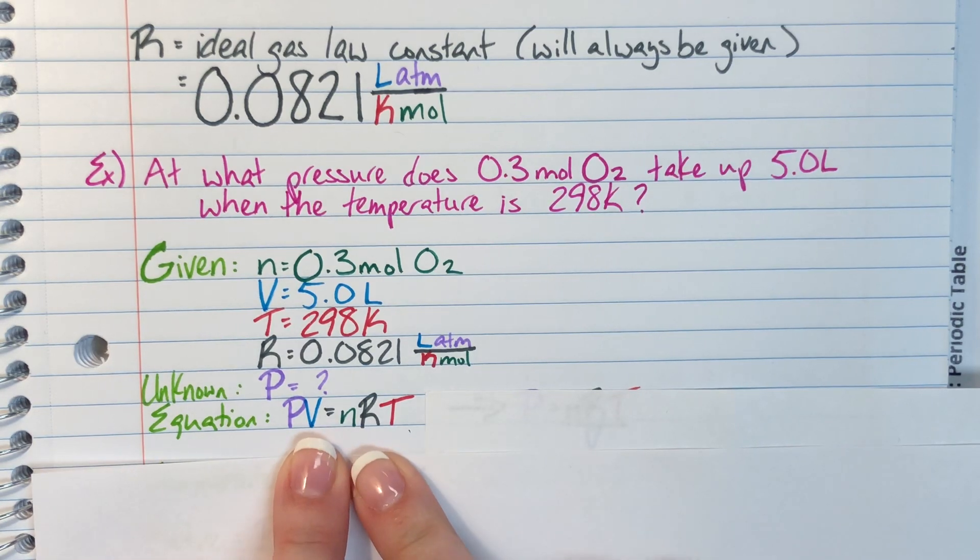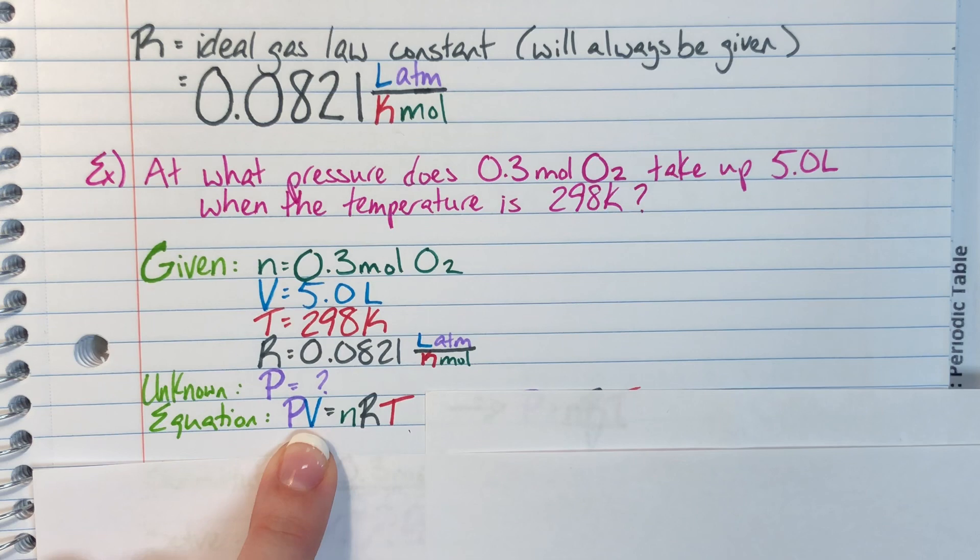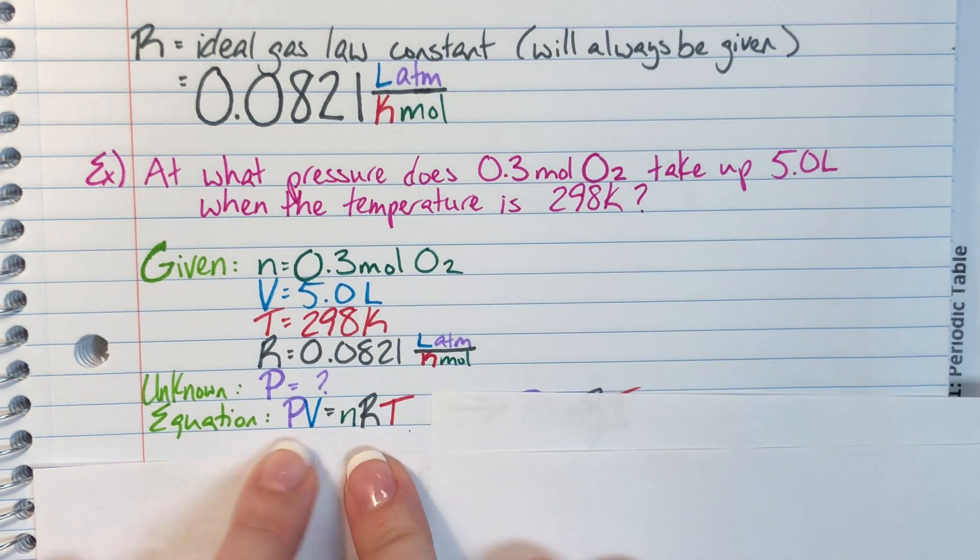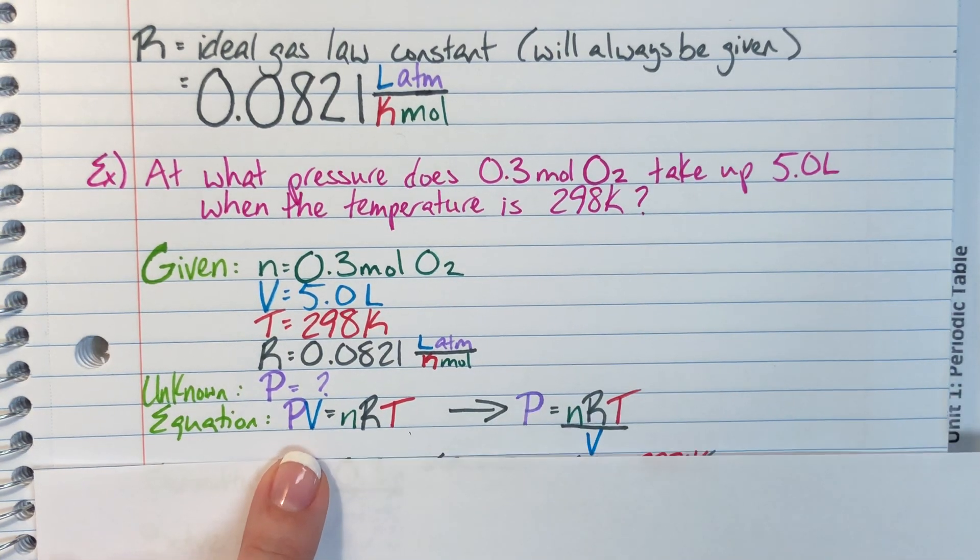I need to isolate my appropriate variable, which is P. Pressure and volume are currently being multiplied, so to undo that operation, I have to do the opposite of multiplication, which is division. So I will divide both sides by V, and that gives me P equals nRT divided by V.